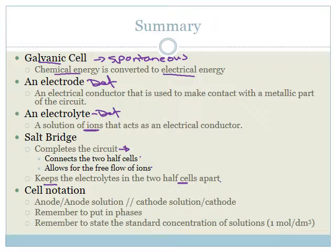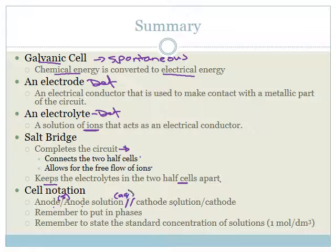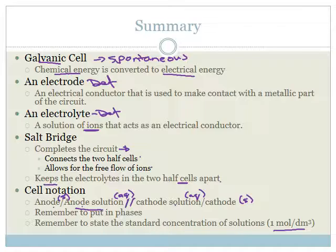For cell notation, the order is always: anode, anode solution, salt bridge, cathode solution, cathode. You must always include the phases — so if your anode is solid, add (s) in brackets; if the anode solution is aqueous, add (aq); cathode solution will probably be aqueous, and your cathode might be solid. Finally, remember to state the standard conditions for solutions, which is 1 mol·dm⁻³. Write the standard concentration either below or next to the anode solution. Please make sure you've studied this and go do the questions in the system to ensure you know this work.